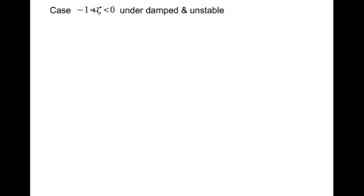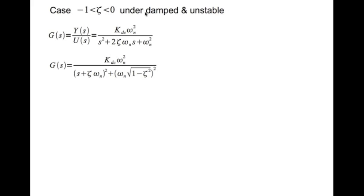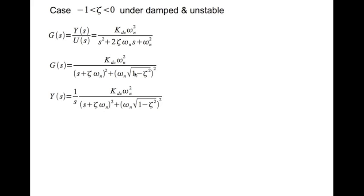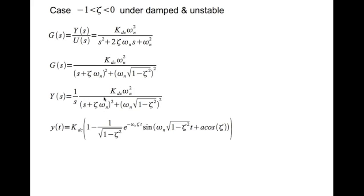The next three cases are unstable systems. The first among these is when zeta is between minus 1 and 0 — this is diametrically opposite to the underdamped stable case. Since zeta is between minus 1 and 0, the transfer function ends up having complex roots, so you can do completion of the square. You then have the expression for Y(s) assuming U(s) is a step function, and you can do partial fraction expansion and invert Y(s) to get y(t).